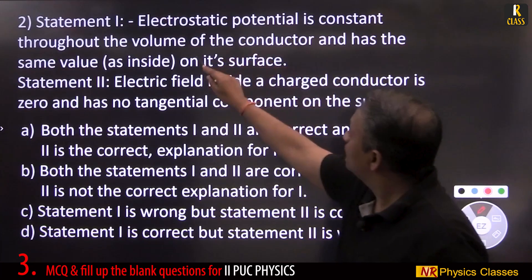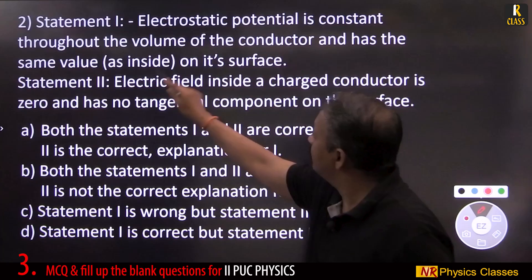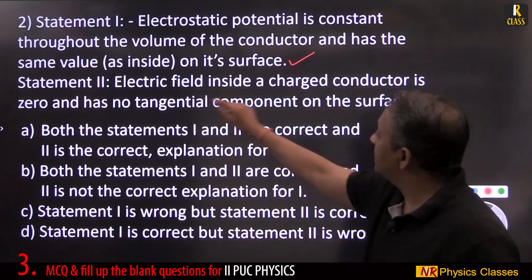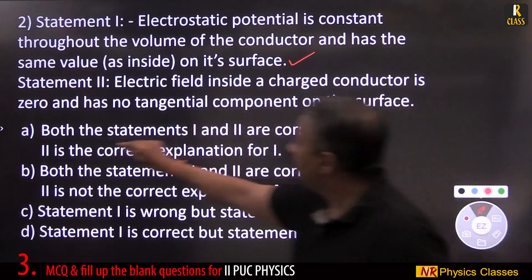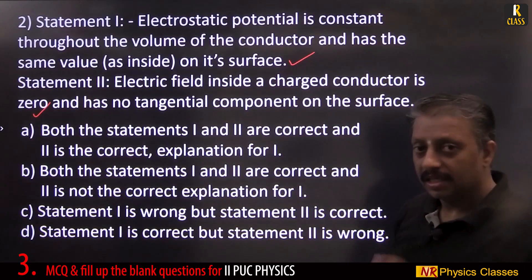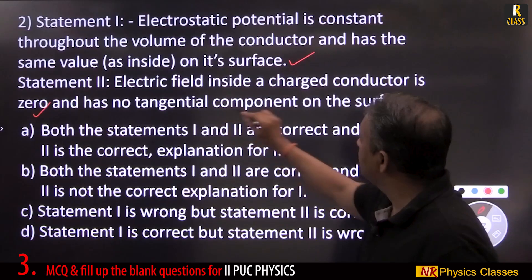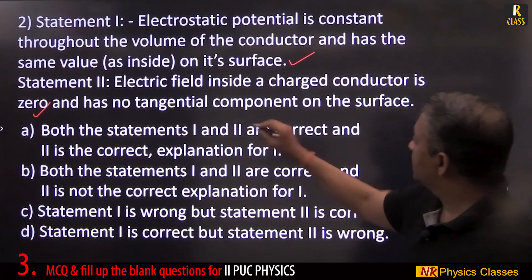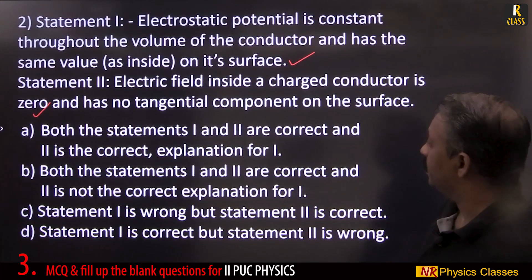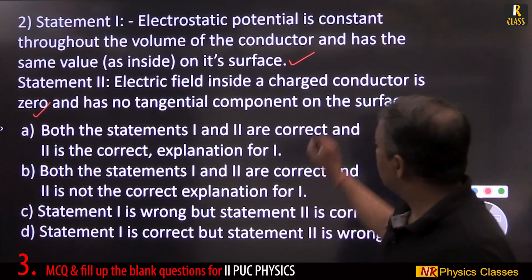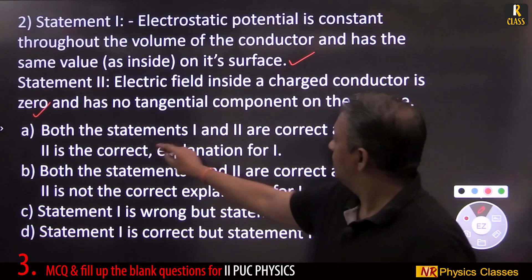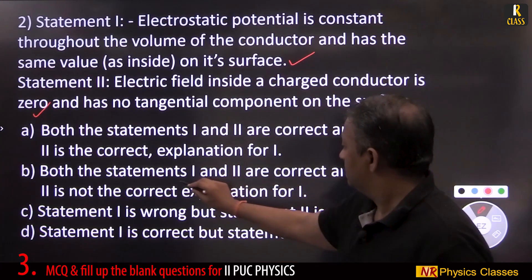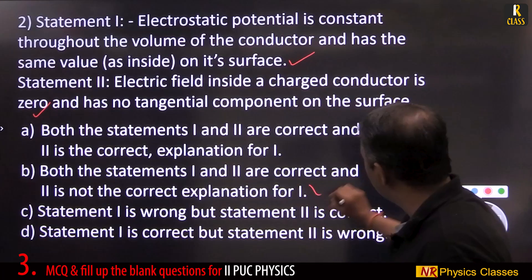Electrostatic potential is constant throughout the volume of a conductor and has the same value on its surface. Statement: electric field inside a charged conductor is zero, and it has no tangential component on the surface. Both these statements are correct, and statement 2 is the correct explanation of statement 1.